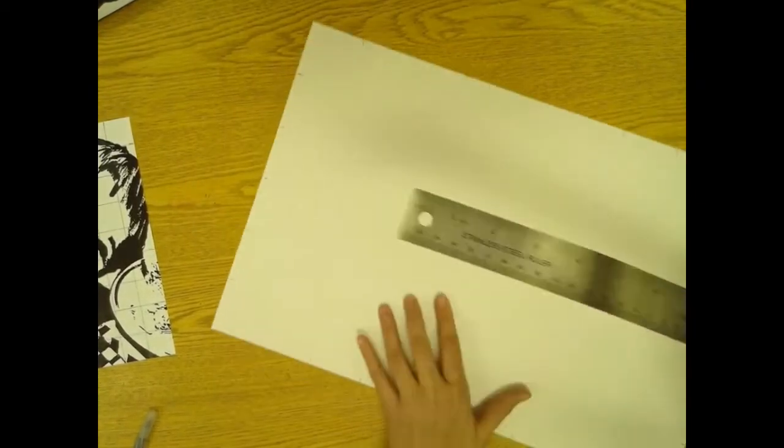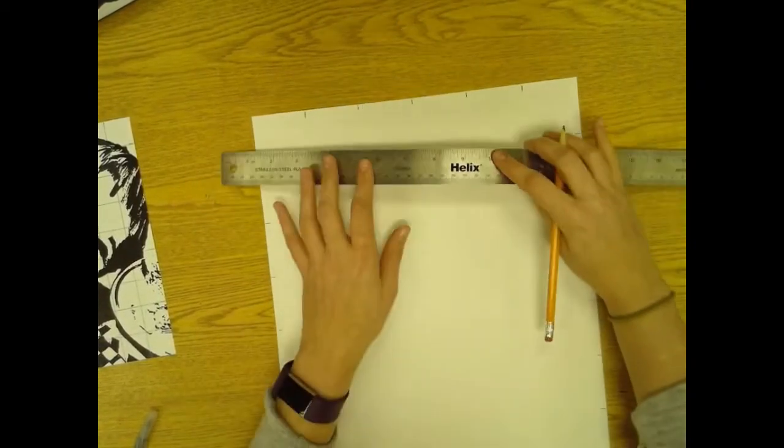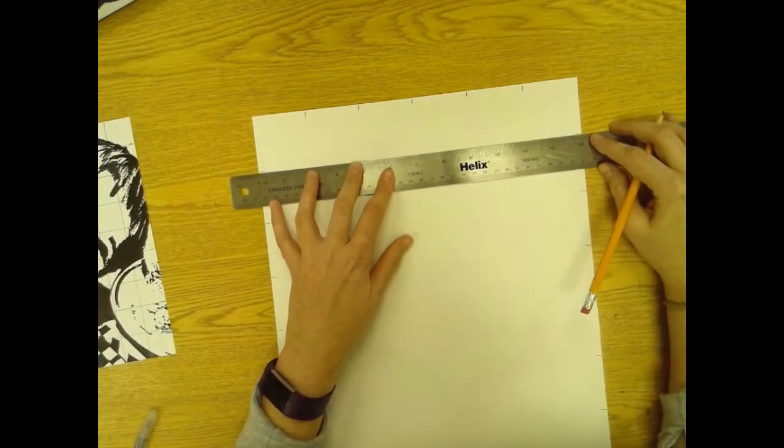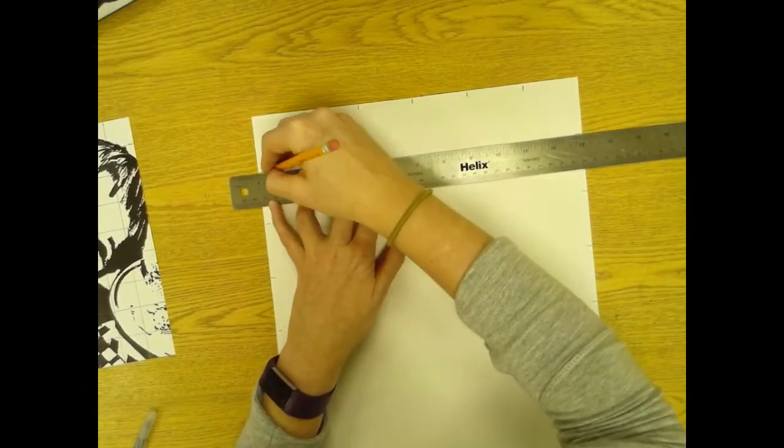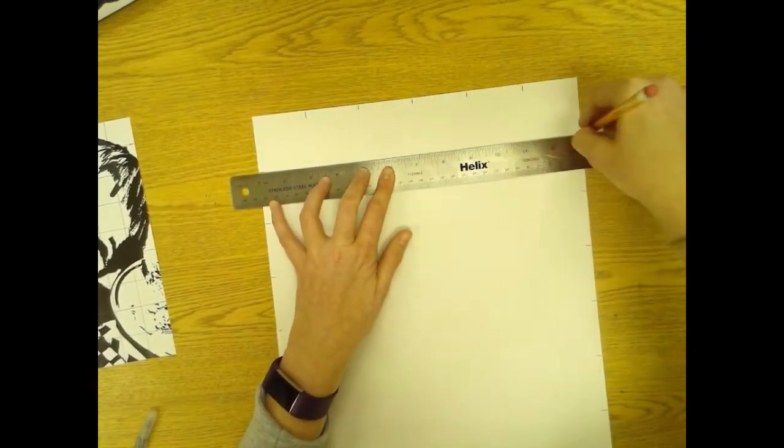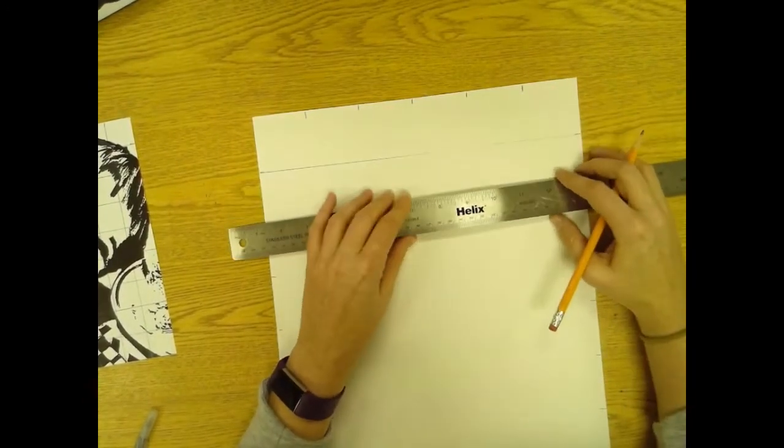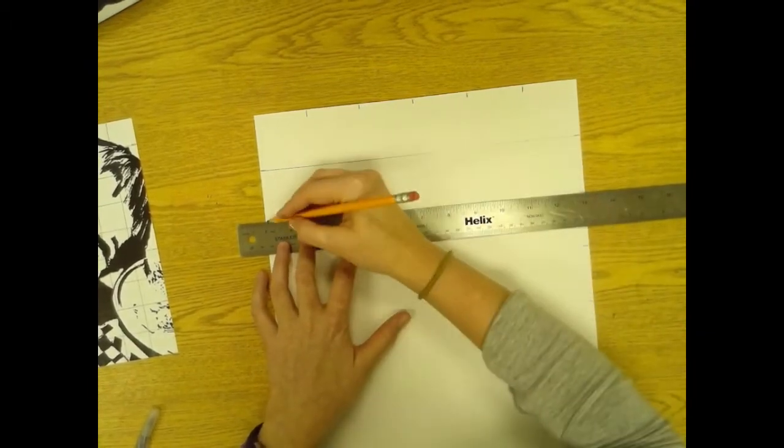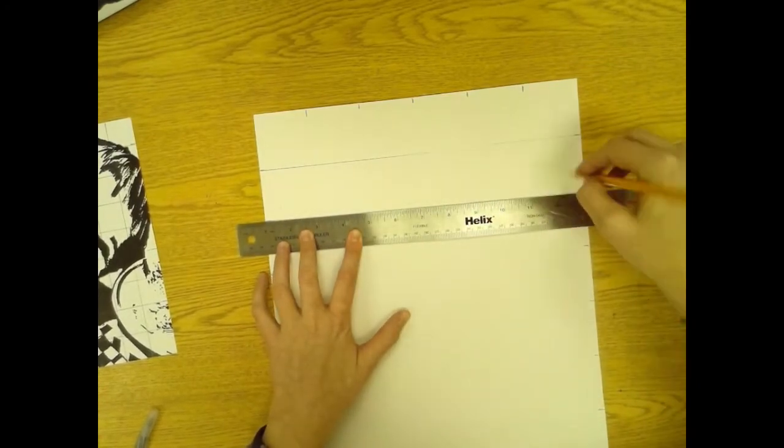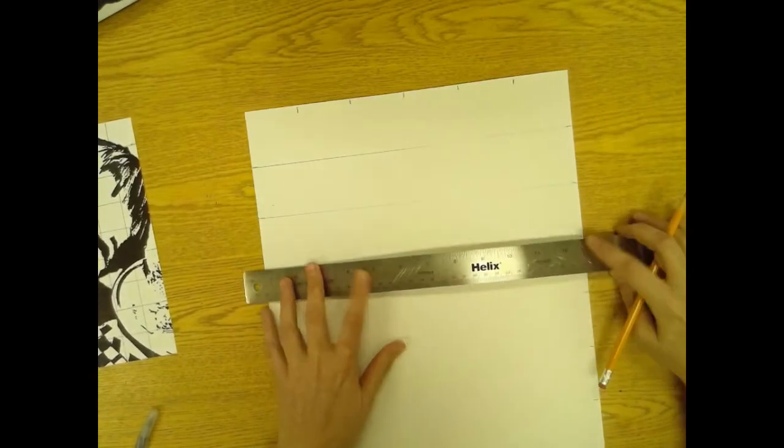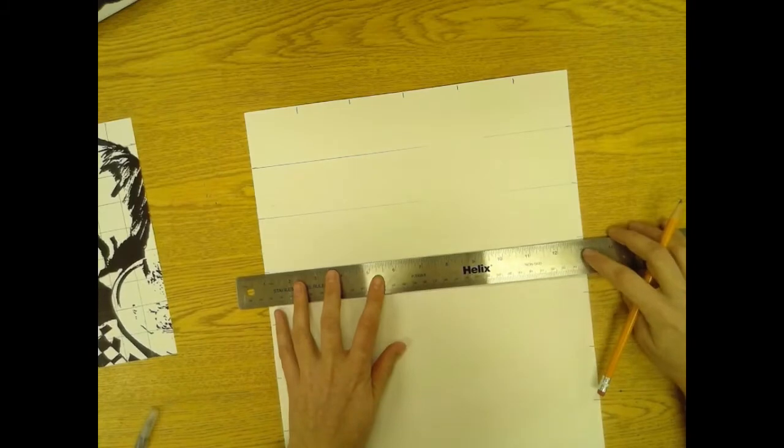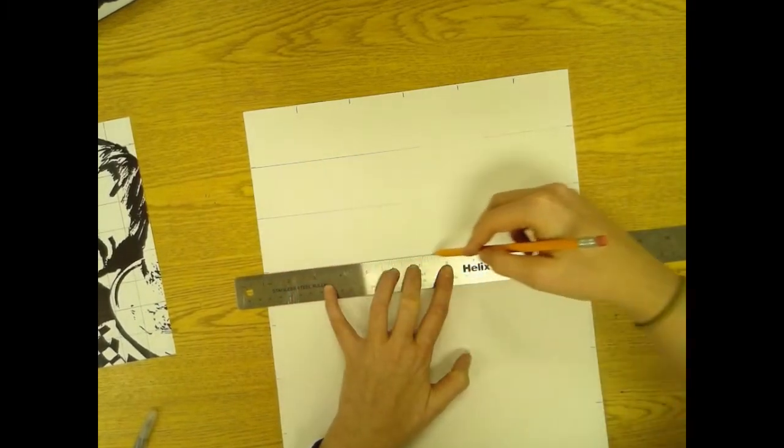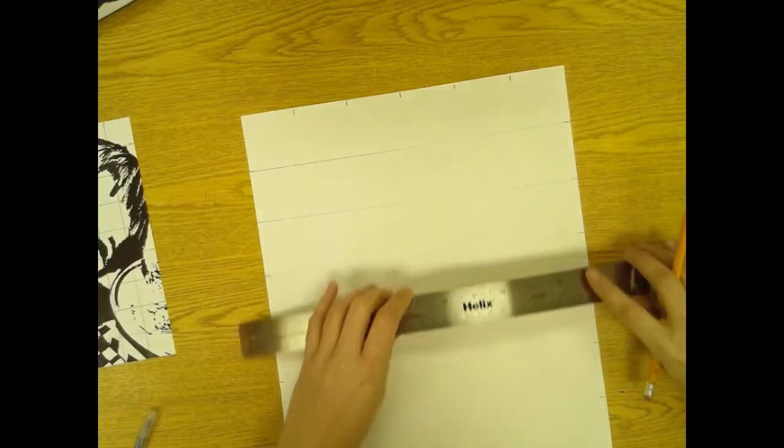And just like on your photograph, we're going to connect all of these lines. With these lines you want to draw them just a little bit lighter because we will be erasing these. Don't push your pencil down on the paper, just drag it across.